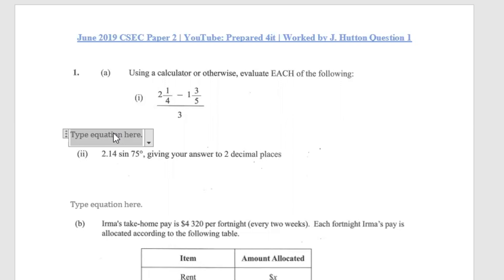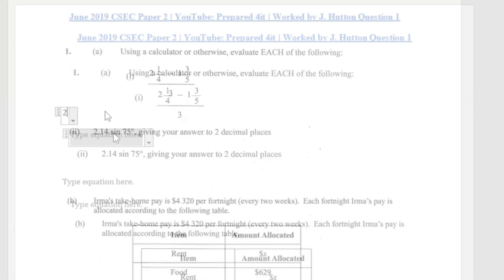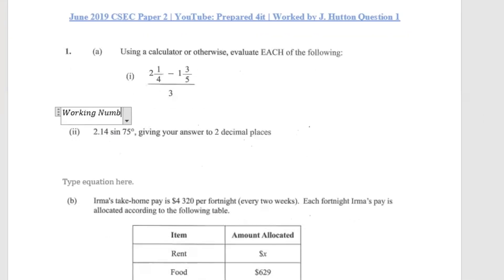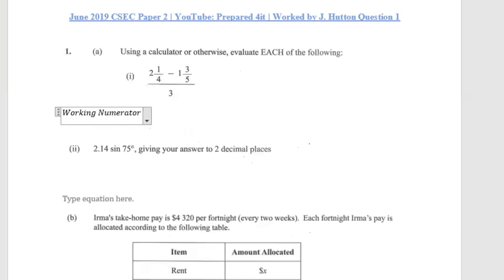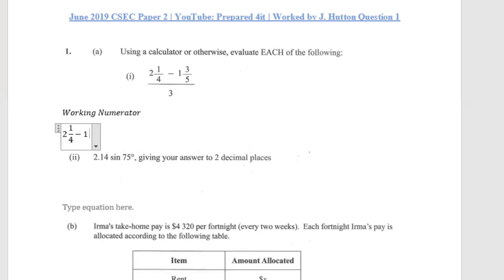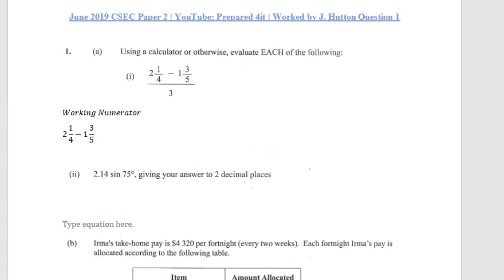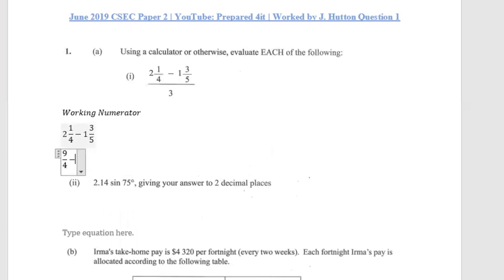They gave us a fraction which has fractions at the numerator and a whole number at the denominator. We're going to start by first working the fractions at the numerator. We'll rewrite and work the numerator: we have two and a quarter minus one and three over five. First, we change these mixed fractions to improper fractions: two times four is eight, plus one gives us nine over four; and five times one plus three gives us eight over five.